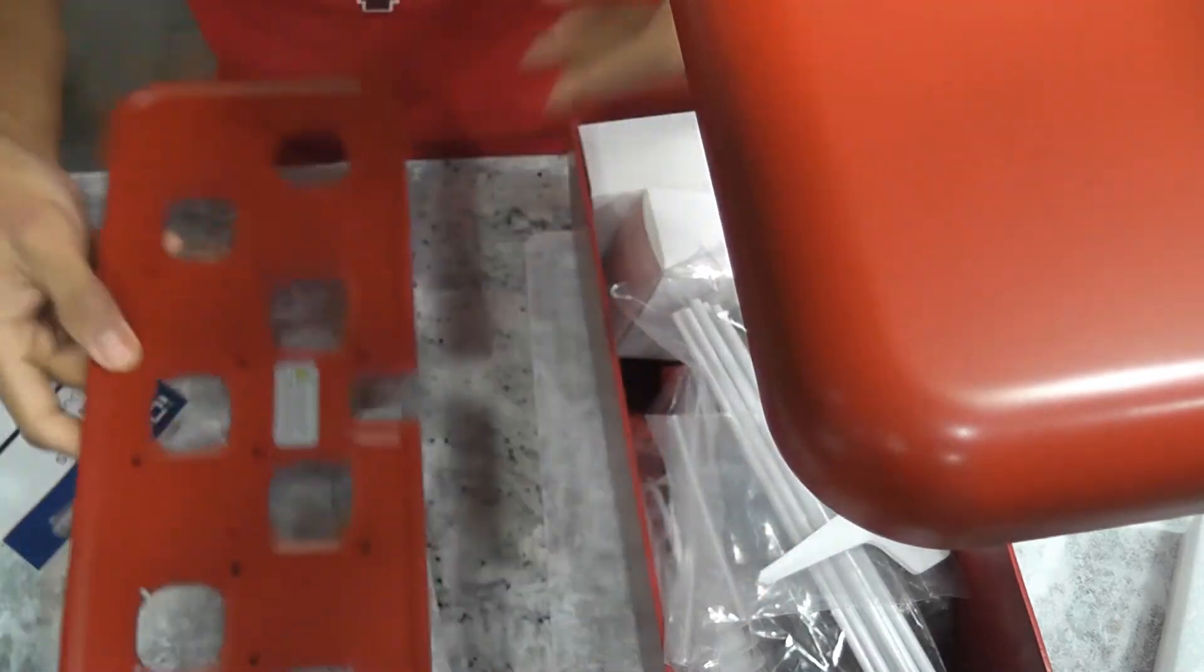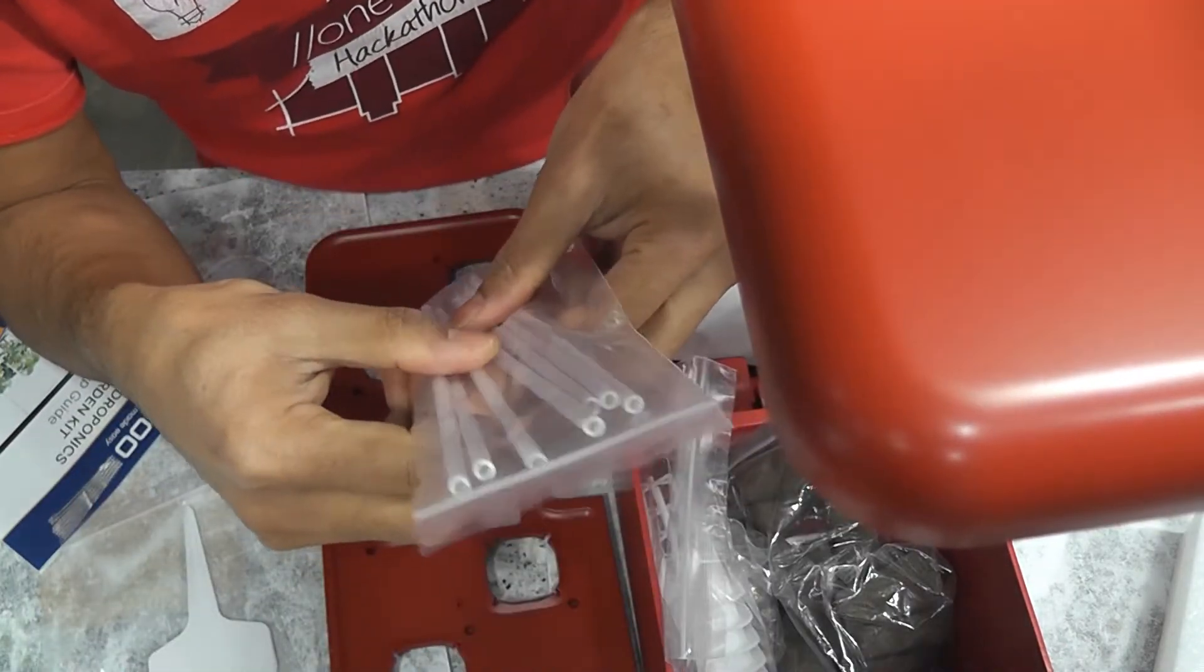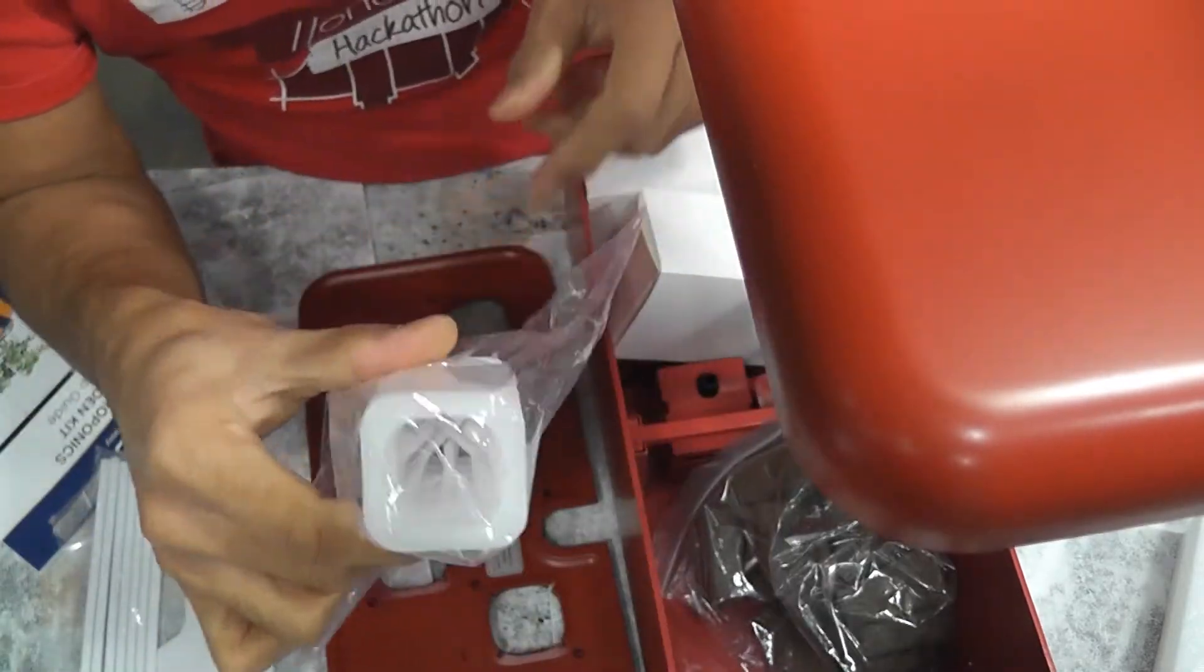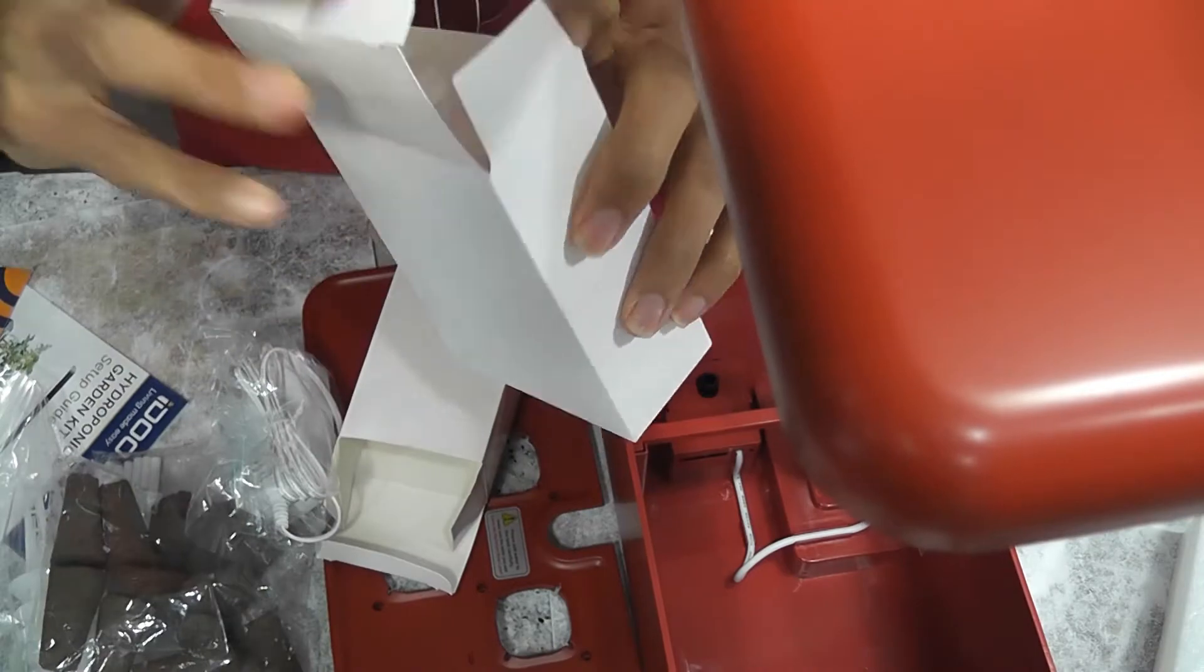It supports 7 plants. I got some tags, some sticks to support plants, 7 baskets, 14 sponges, an adapter and finally nutrition.